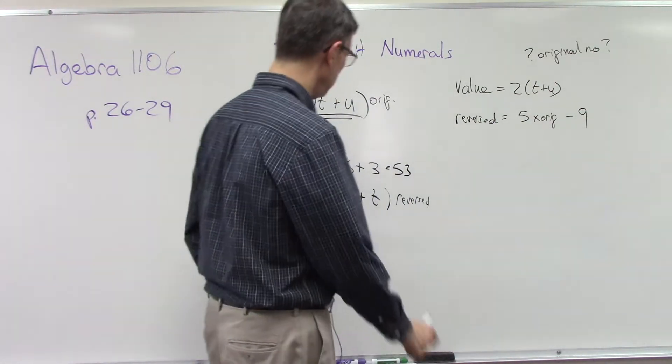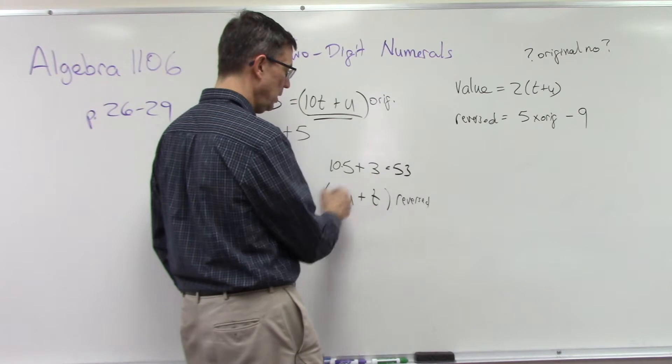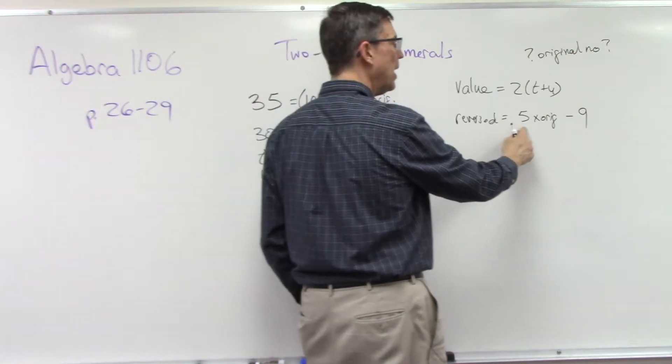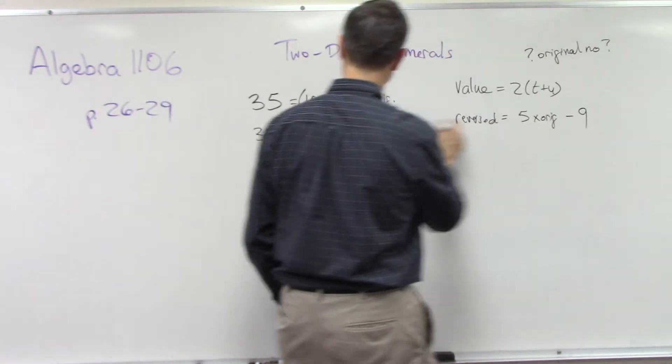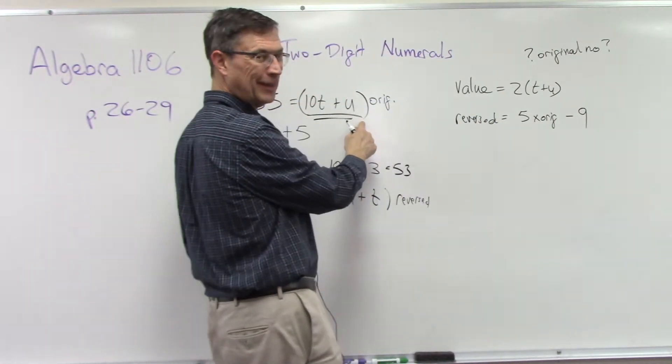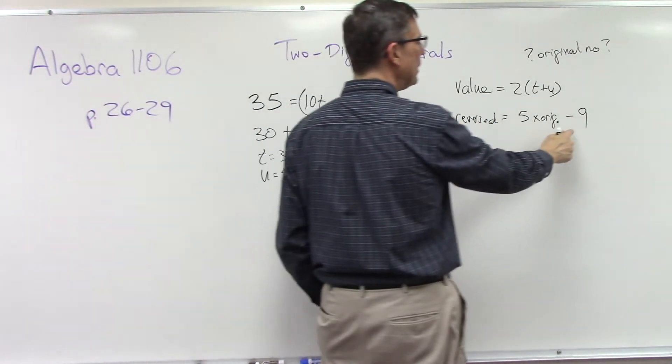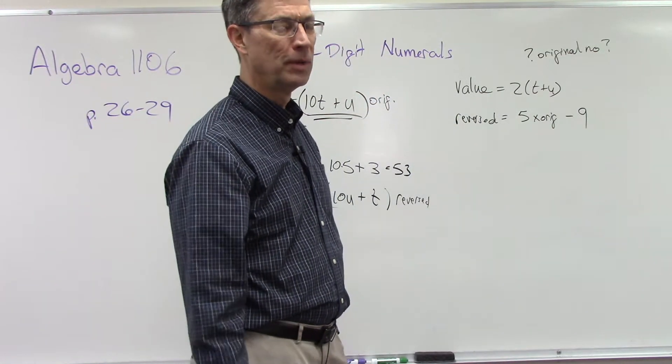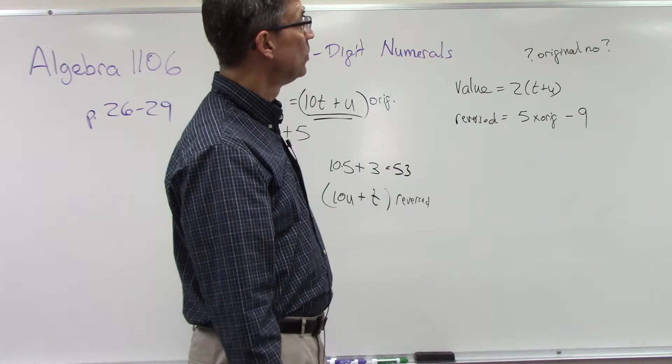Okay, and then it says that if we reversed the digits, so that would be this formula, that would be equal to five times the original number, which is this formula. And then it says nine less than five times the original number. Okay, it's kind of setting you up for one of the problems you have here in the pace, so I'm not going to solve it for you.